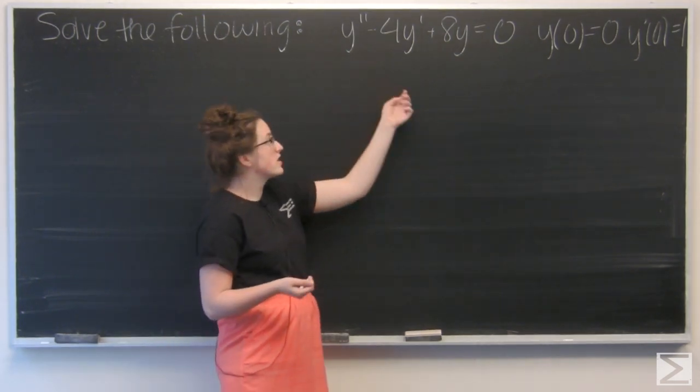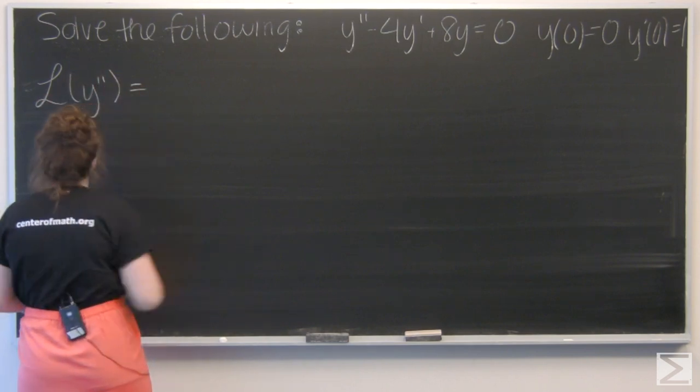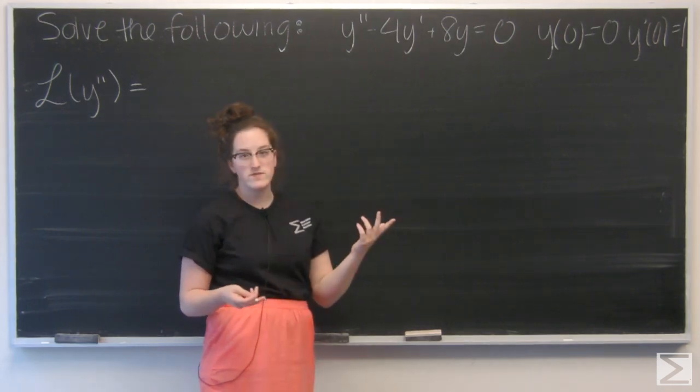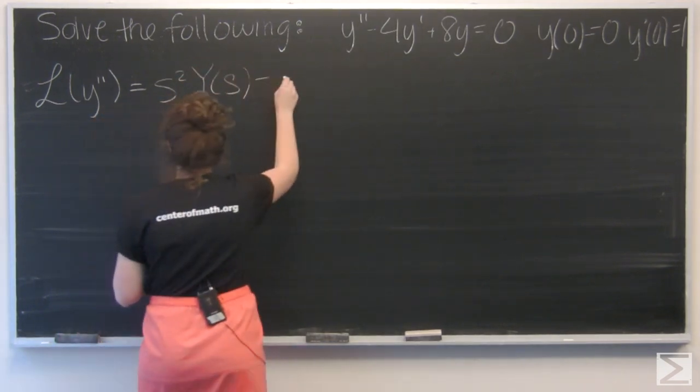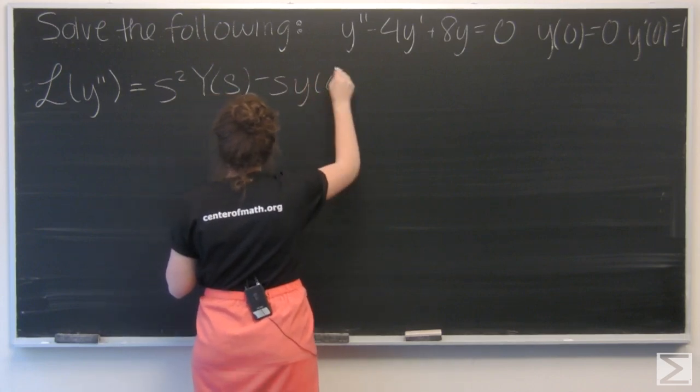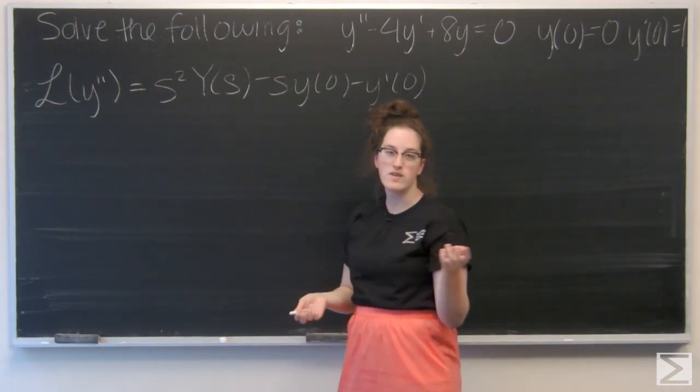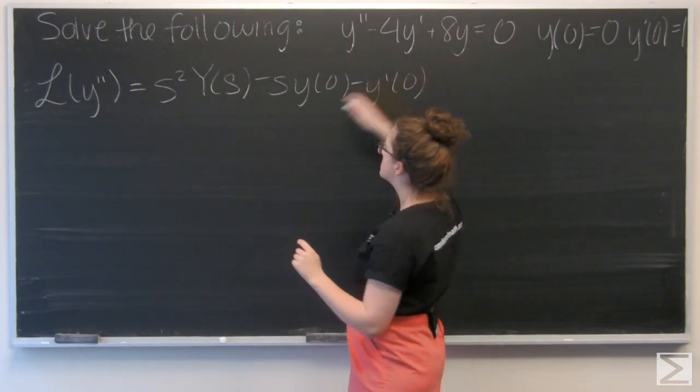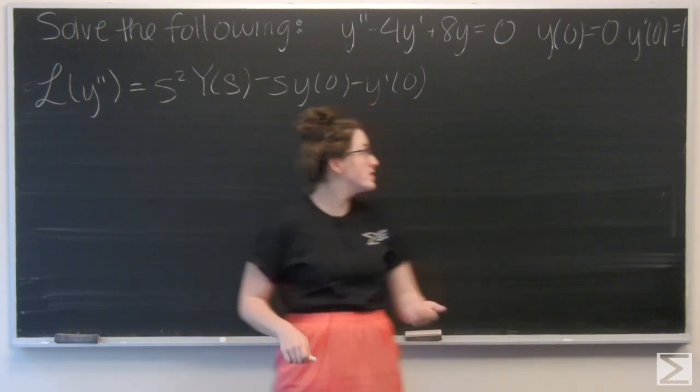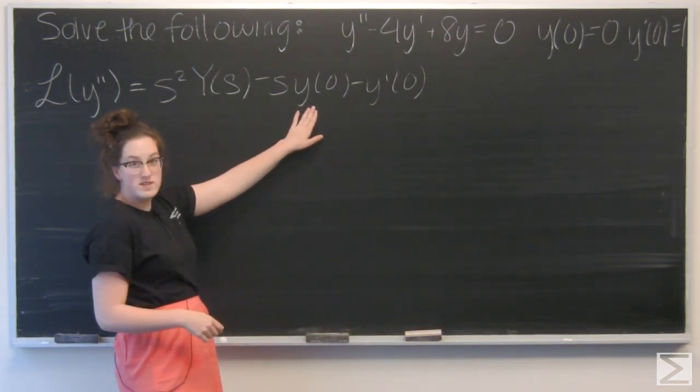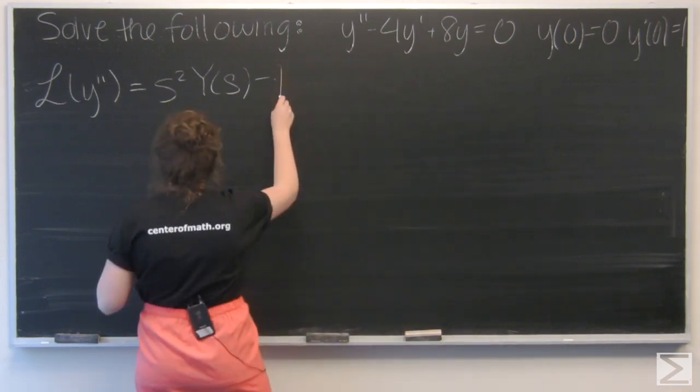I want to take the Laplace transform of each term. So let's start with y''. Let's recall the general formula for a Laplace transform of the second derivative of a function. So it's s² times capital Y(s), which is just the Laplace transform of y, minus s times y(0), minus y'(0). And I'm given both of those initial conditions, so let's go ahead and fill those in. This term drops out to be 0, and this becomes just subtracting 1.